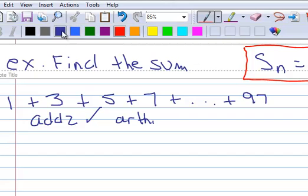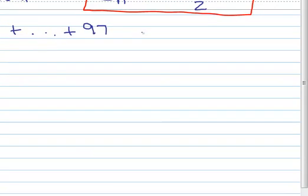So in order to use any formula, you have to understand what all this stuff means. So we have S sub n. We have n. We have a sub 1. We have a sub n. And then, of course, we have a 2.